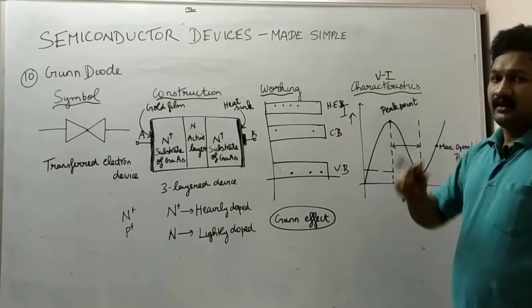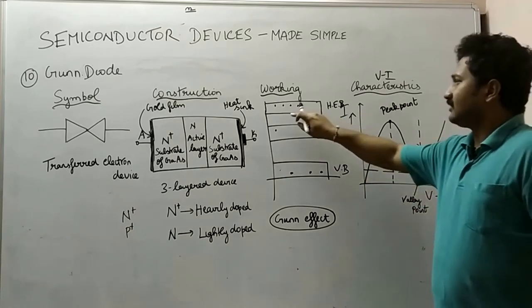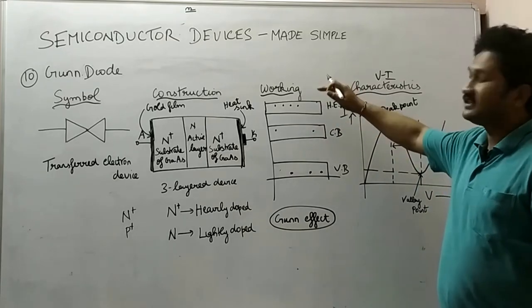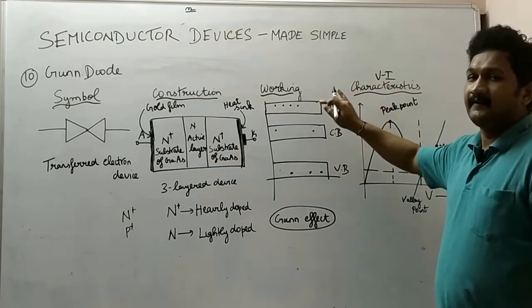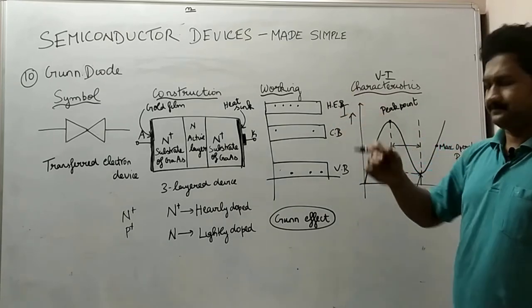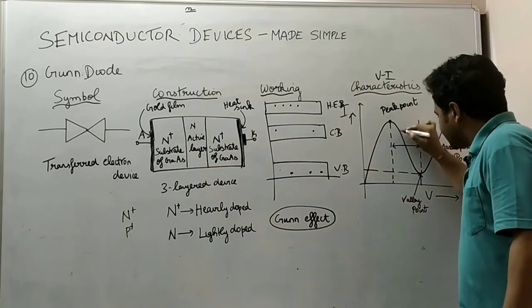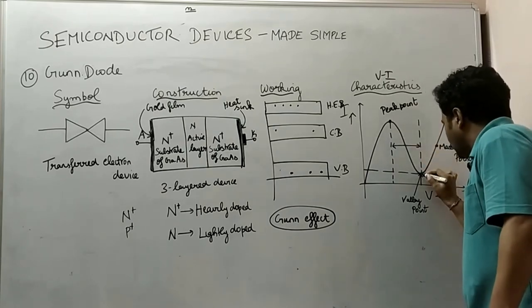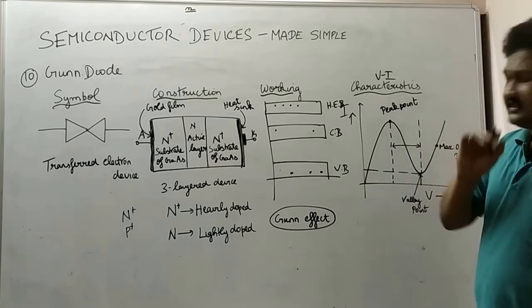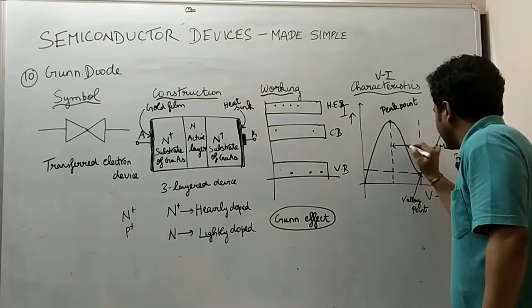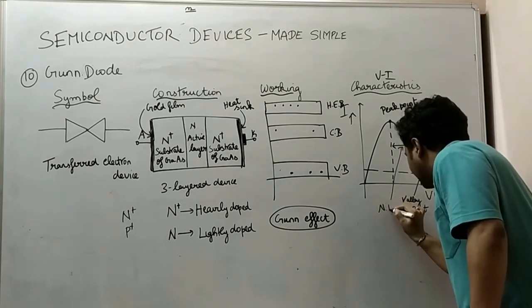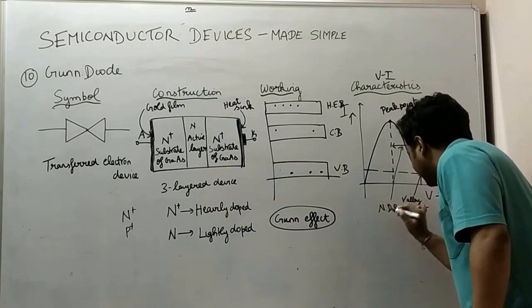Now, the electrons that have reached the higher energy band are immobile. So when the external applied voltage is further increased, the current starts to decrease from the peak point down to a lower point called the valley point. This particular region is called the negative dynamic resistance region.